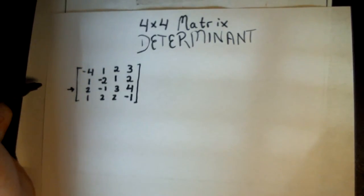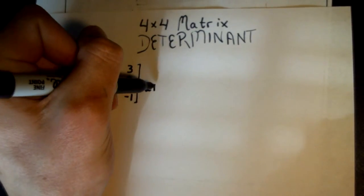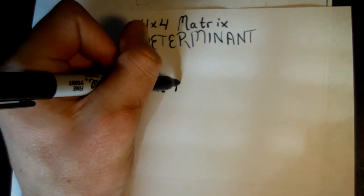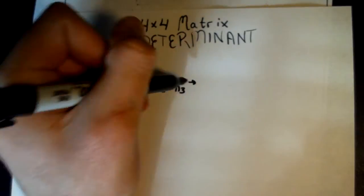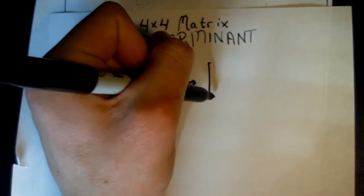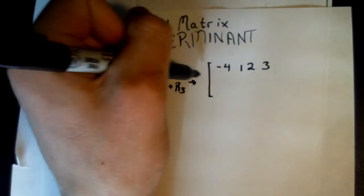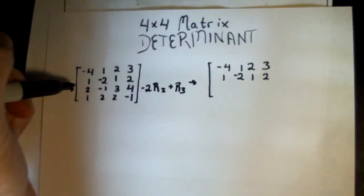So what I found to be the best result is to make this guy have two zeros, and I did that by multiplying negative 2 by R2 plus R3, and that will result in, we have negative 4, 1, 2, 3 up top, that stays the same, the second row stays the same.